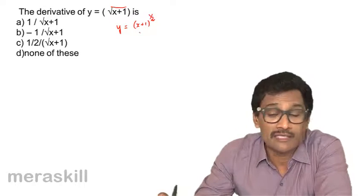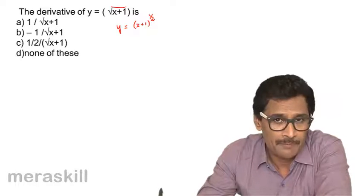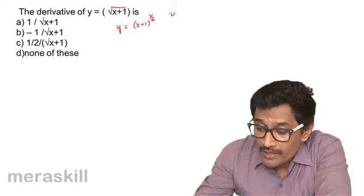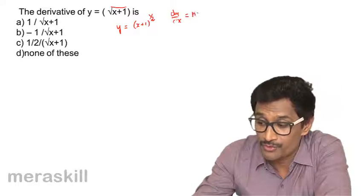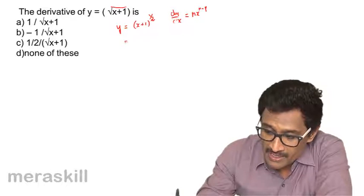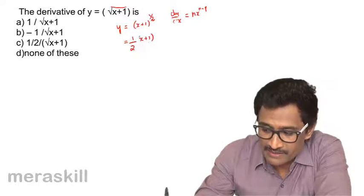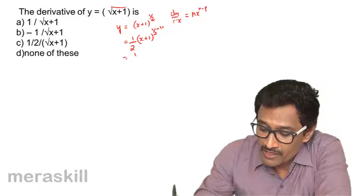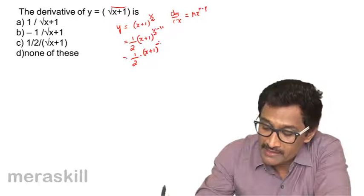Candidates shouldn't be under the impression that n always has to be a whole number. It can be a fraction; it can be a negative number too. We are using the rule dy by dx equals nx raised to n minus 1. Hence, this would be n — that is half — into x plus 1 raised to half minus 1, which is going to be half into x plus 1 raised to minus half.